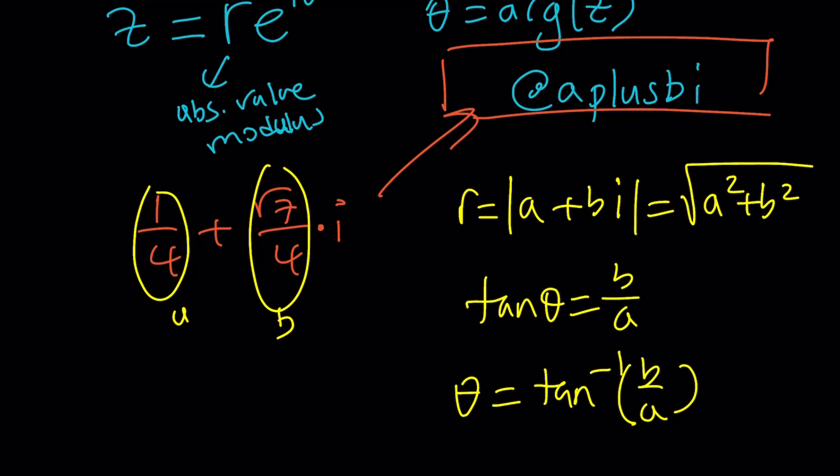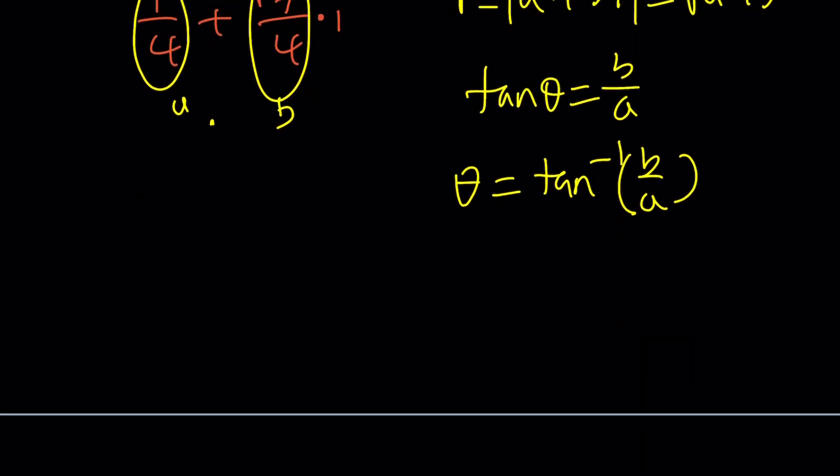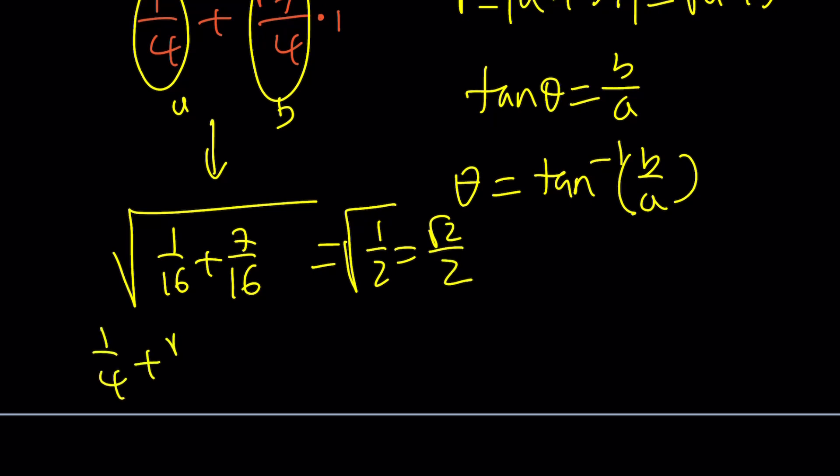So what do we do with this? We can write our number as R, which is the square root of 1 over 16 plus 7 over 16. By the way, that's 8 over 16, which is 1 half. So this is the square root of 1 half or root 2 over 2.